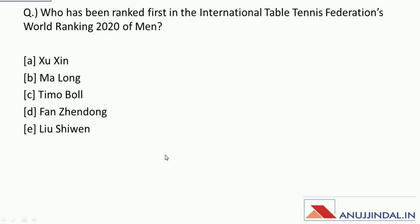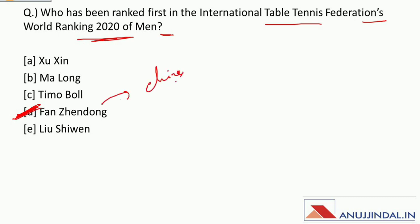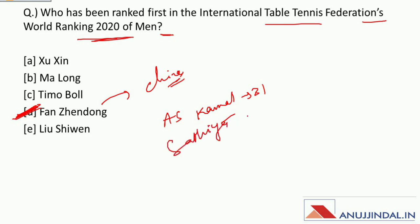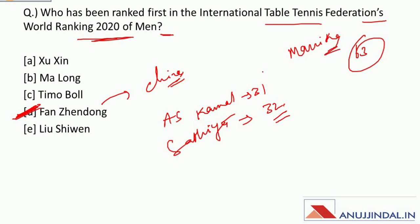Who has been ranked first in the International Table Tennis Federation's world ranking 2020 for men? It is Fan Zhendong of China. Among Indians, A.S. Kamal is at rank 31 and Sathiyan Gnanasekaran is at rank 32. Among women, Manika Batra is at rank 63.